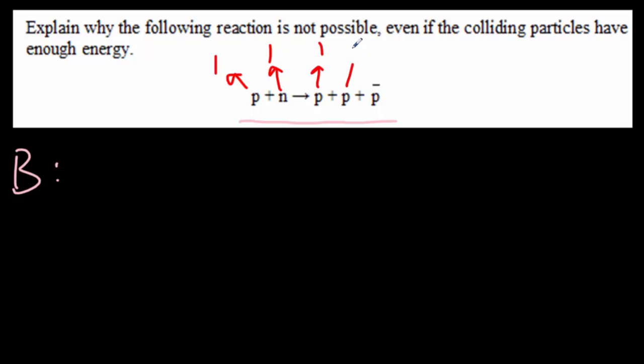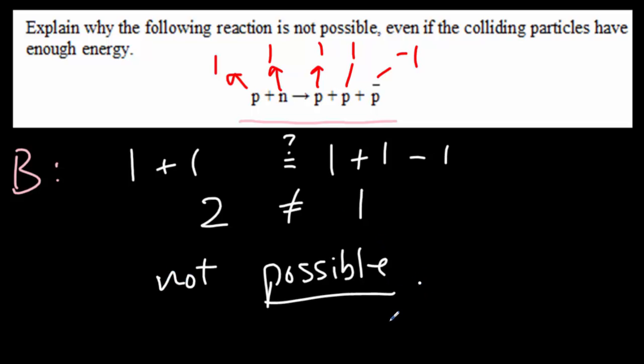Proton one. Antiproton minus one. Let's add them up. Left-hand side, one plus one. Right-hand side, one plus one minus one. Two does not equal one and therefore the baryon number is not satisfied and the reaction is not possible. It's that simple.